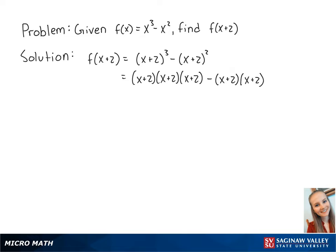Let's first focus on the first two binomials, and we can multiply these by distributing. So we get x squared plus 2x plus 2x plus 4 times x plus 2. Notice that these two binomials are the same as these two.